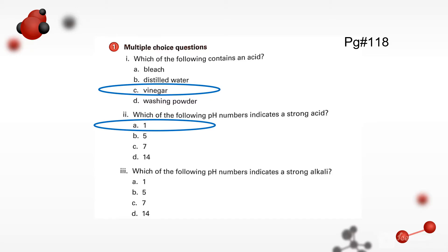Now come towards the third part of this question. Which of the following pH number indicates a strong alkali? We all know that greater the pH number, stronger the alkali is. So 14 is the greater number, the strongest alkali. Option D is the correct one.